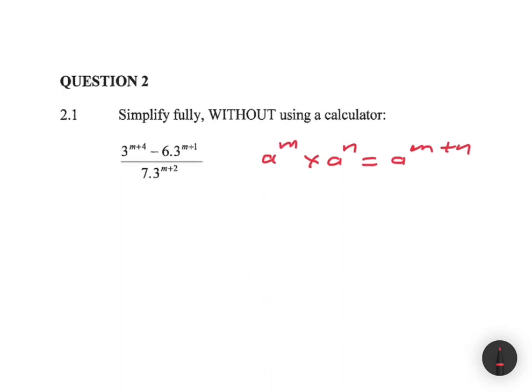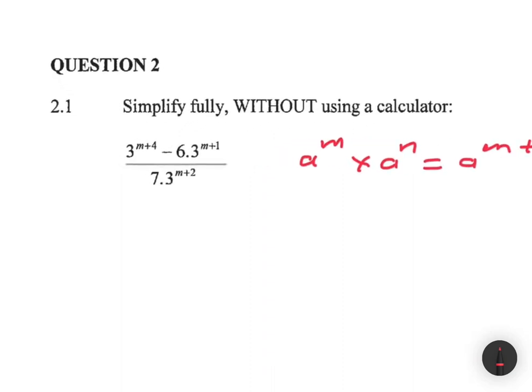We can see here on the numerator that we have 3 to the power m plus 4 minus 6, multiplied by 3 to the power m plus 1, and then on the denominator we have 7 multiplied by 3 to the power m plus 2.